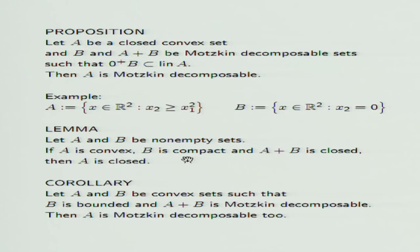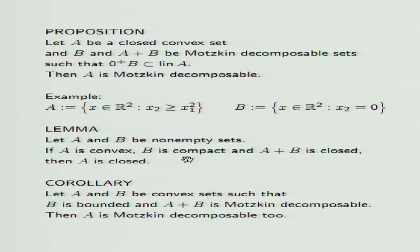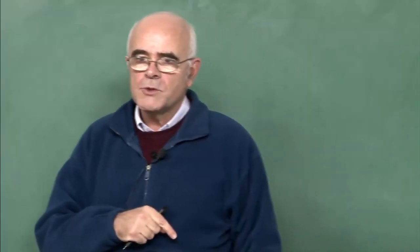There are several questions related to operations with Motzkin decomposable sets. Here is one: suppose we have two closed convex sets A and B, and B is Motzkin decomposable, and when we form the sum A plus B, the sum is Motzkin decomposable. Can we deduce that A is also Motzkin decomposable?